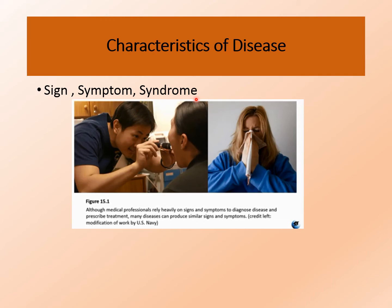A syndrome is a combination or group of signs and symptoms which are particularly associated with a specific disease. There are some effects which remain long after the disease has gone — these are called sequelae. For example, as seen in the case of polio, the kids remain paralyzed for much of their life. That is the sequela of poliomyelitis.